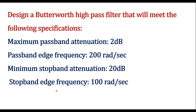In this video, I will discuss the design of a Butterworth high pass filter. Design a Butterworth high pass filter that will meet the following specifications: maximum passband attenuation is 2 dB, passband edge frequency is 200 radians per second, minimum stopband attenuation is 20 dB, and stopband edge frequency is 100 radians per second. With these specifications, we have to design a Butterworth high pass filter.